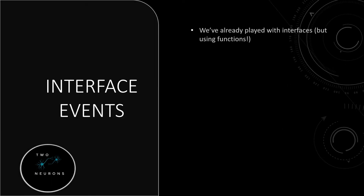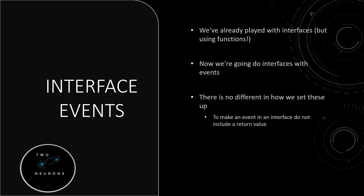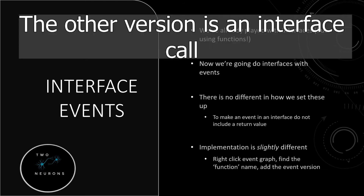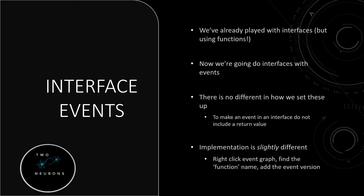Next let's talk about interface events. We've already played with interfaces using just functions. Now we are going to do events. An interface event is set up the same way - we use the same interface; in fact we will be using the iPlayerCharacter interface we created in video 9. The only difference is with an interface event you don't add a return node - that is how you say this is going to be an event. How you implement them is slightly different: there is no listing of that interface event on the left-hand panel under interfaces. You have to right-click on the event graph, type in your interface event's name, and find the 'add event' version of it. There will be a message version and an add event version - you want the add event version to implement it. You can use the other ones to call the event.